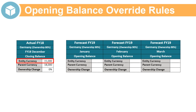For example, you could create a rule to copy the first period opening balances for the forecast scenario from the prior year closing balances of the actual scenario. For entities that require translation, translated values are copied from the parent currency member of the prior year closing balances in the source scenario.